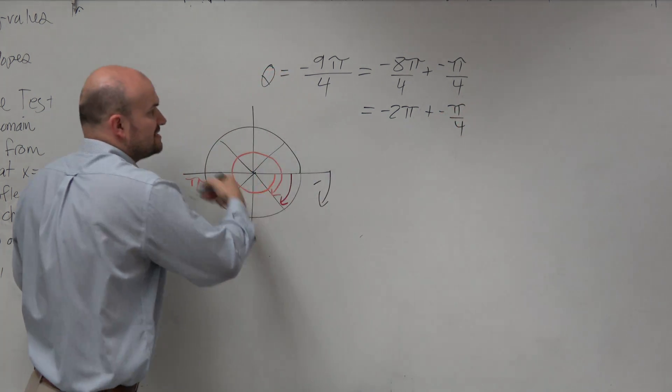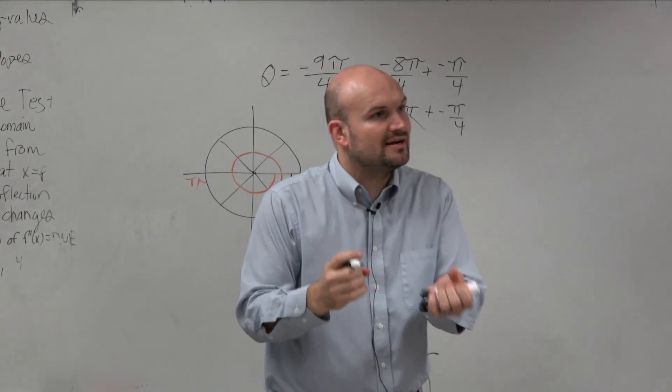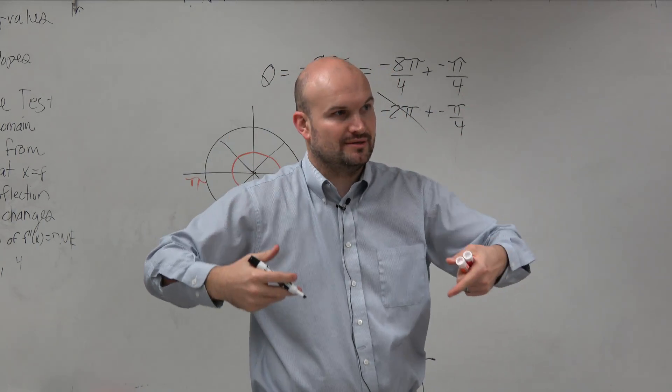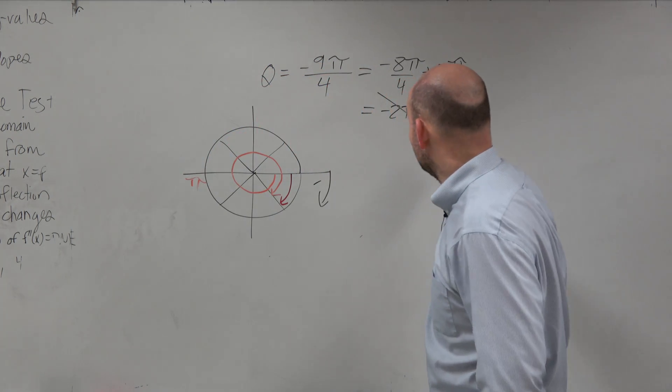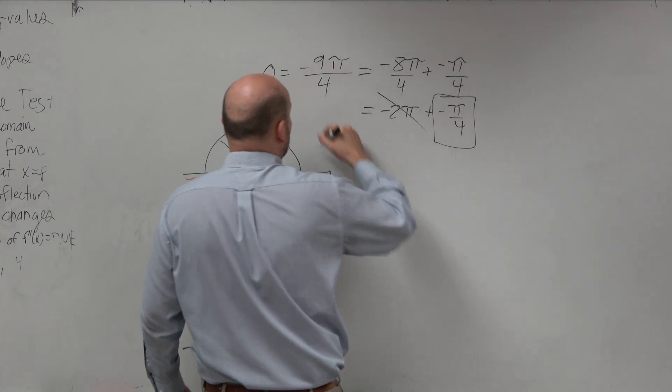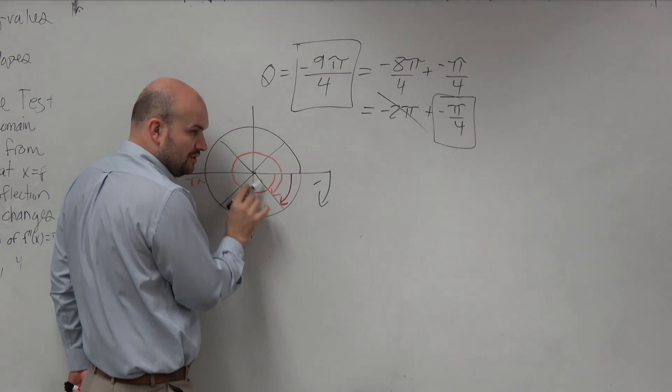And negative 2 pi, guys, is just a revolution. It doesn't really change the initial or terminal side of the angle. It's just extra rotation, correct? So using our understanding of coterminal angles, negative pi over 4 and negative 9 pi over 4 are coterminal because they have the same initial and terminal side.